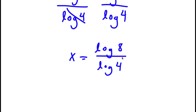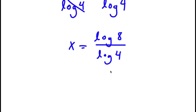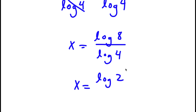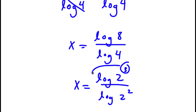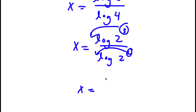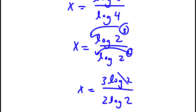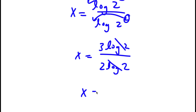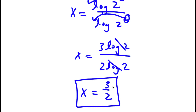Now remember, 8 equals 2 to the power of 3 and 4 equals 2 to the power of 2. So now I have log 2 to the power of 3 over log 2 to the power of 2. I can move these exponents to the front. So now I have x is equal to 3 times log 2 over 2 times log 2. These two log 2s cancel out. So I'll simply be left with x is equal to 3 over 2. So this is my answer.